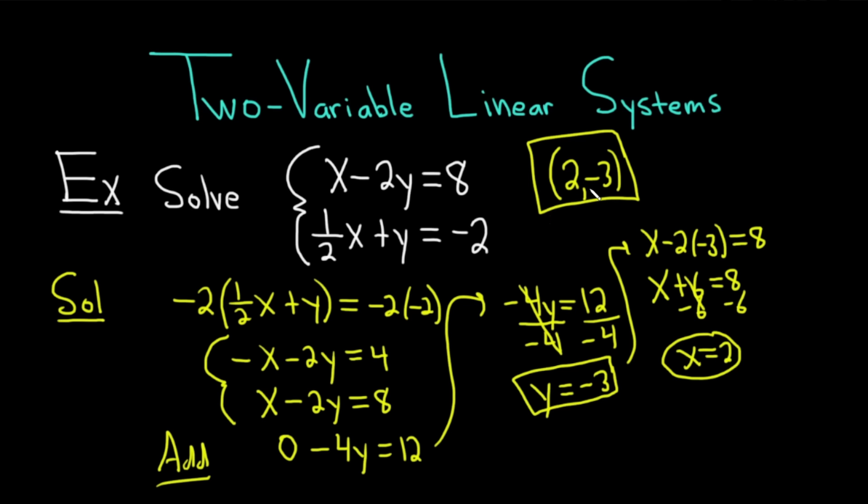Graphically, this basically means that if you were to graph both of these equations, they would intersect at the point 2 comma negative 3. So it does have that graphical meaning. Let's go ahead and do another example because sometimes you don't get an answer, or sometimes you get infinitely many solutions. Let's look at those specific cases.